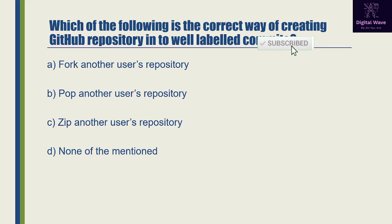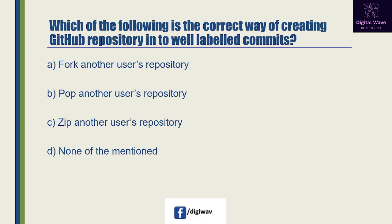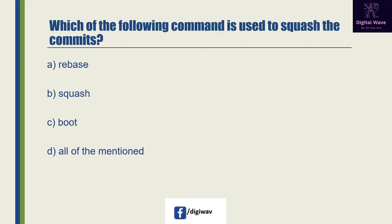Next question: which of the following is the correct way of creating a GitHub repository into well-labeled commits? Option A is 'fork another user's repository', option B is 'pop another user's repository', option C is 'zip another user's repository', and the last option is none of the mentioned. The right answer will be A, because a fork is a copy of a repository.